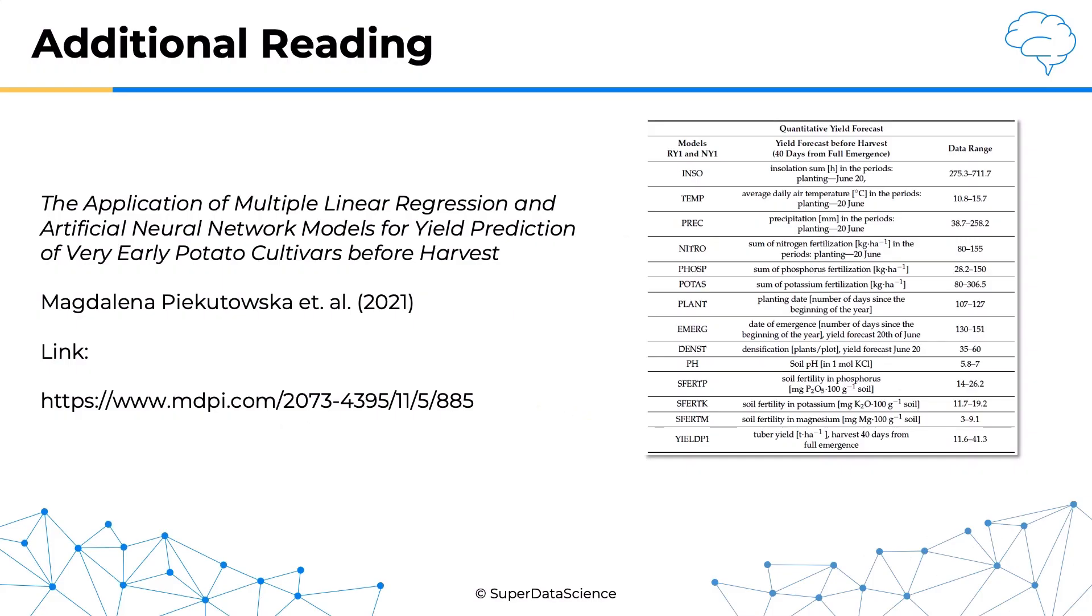applications of multiple linear regression, here's a research paper you might be interested in. It's called 'The Application of Multiple Linear Regression and Artificial Neural Network Models for Yield Prediction of Very Early Potato Cultivars Before Harvest.' This paper combines multiple linear regression and neural networks, looking at two different modeling approaches. You can focus on the multiple linear regression if you like - it's quite an interesting read.